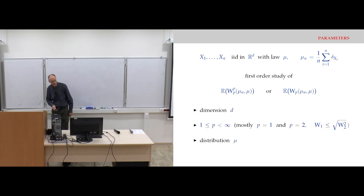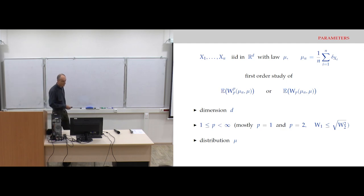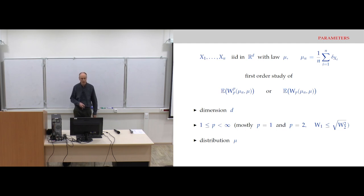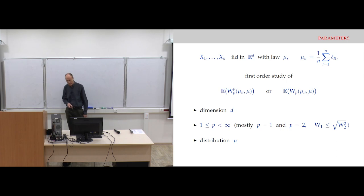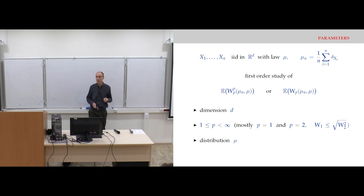We make a first-order study of the expected value of W_p^p from μ_n towards μ. As discussed, this depends on three parameters: the underlying dimension where the random points take their values, the parameter p of the Kantorovich metric and cost function, and the common distribution μ. This problem is rather sensitive to the dimension. Let us start in dimension one.